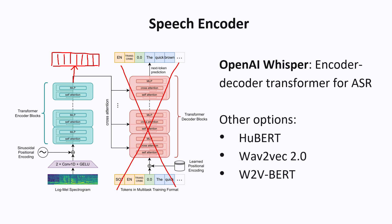Other popular options for the speech encoder include HuBERT, Wave2Vec 2.0, and Wave2Vec BERT. These models have a different architecture from Whisper, since they are self-supervised and do not have a decoder at all. But for the purposes of this video, this difference in architecture is not too important, because you can just think of them as models that generate a sequence of speech vectors.